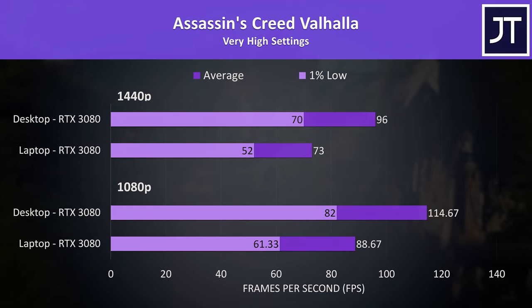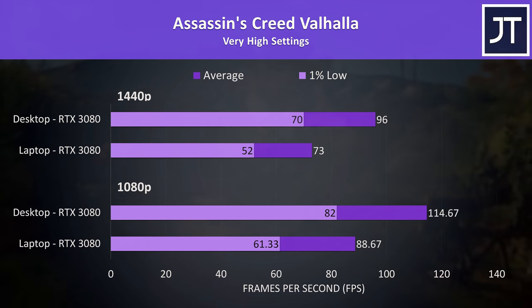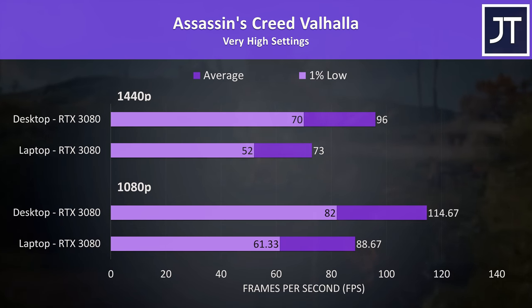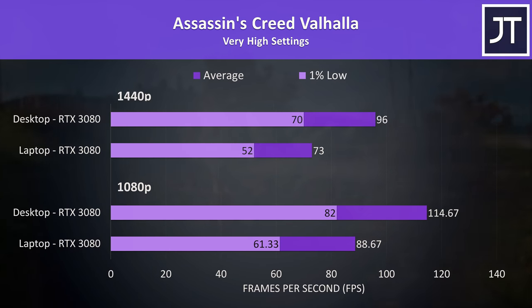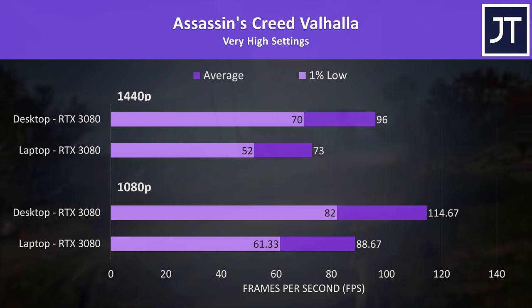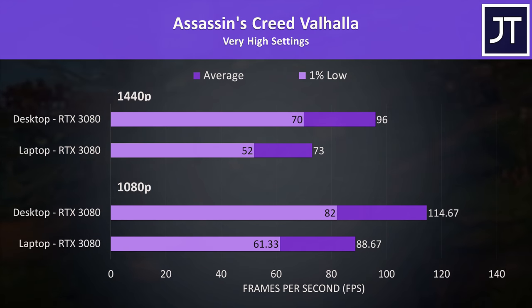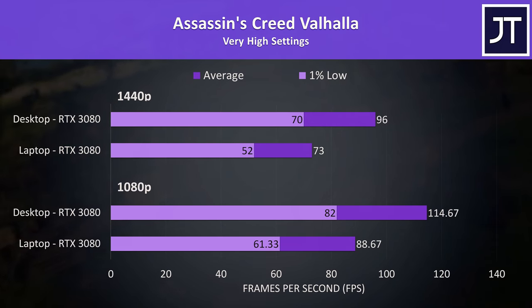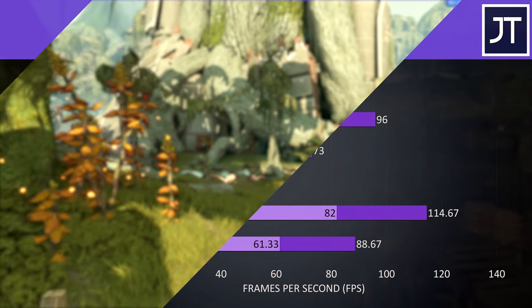Assassin's Creed Valhalla was tested with the game's benchmark too, and this was another that had small differences — around 30% higher average FPS with the desktop. A 30% gain sounds decent standalone, but most other games had even higher boosts on the desktop.